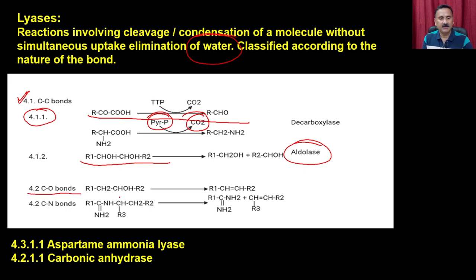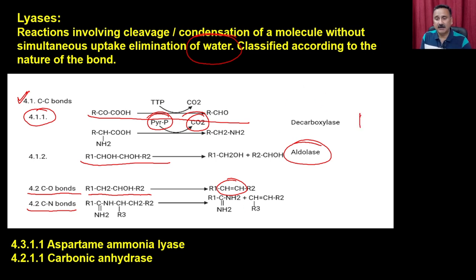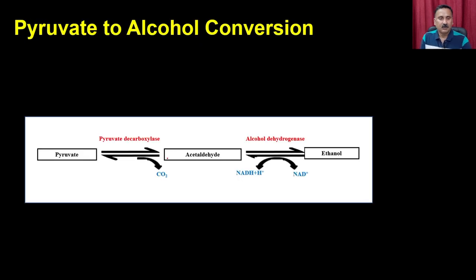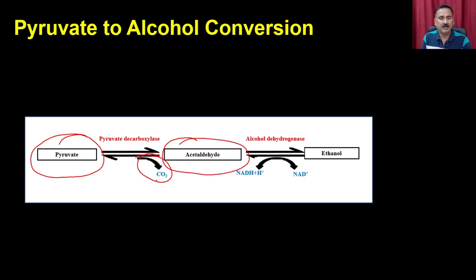Reactions involving cleavage or condensation without water are catalyzed by lyases. For example, 4.1.1 enzymes use pyridoxyl phosphate to catalyze decarboxylation reactions; 4.1.2 uses aldehyde lyases. The carbon-oxygen bond class forms a carbon double bond upon loss of the C-O bond. A classical example is pyruvate decarboxylase, which converts pyruvate to acetaldehyde in anaerobic oxidation, participating in alcohol production — releasing one CO2 from pyruvate.